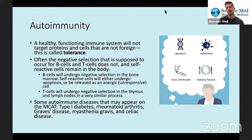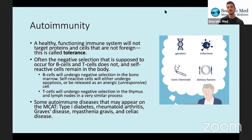So, autoimmunity. A healthy functioning immune system will not target proteins and cells that are not foreign — this is called tolerance. Our ability to not target our own cells is called tolerance. Often the negative selection that is supposed to occur for B cells and T cells does not happen, and self-reactive cells remain in the body. Negative selection is where any cell that reacts with one of our own self-cells gets eliminated.